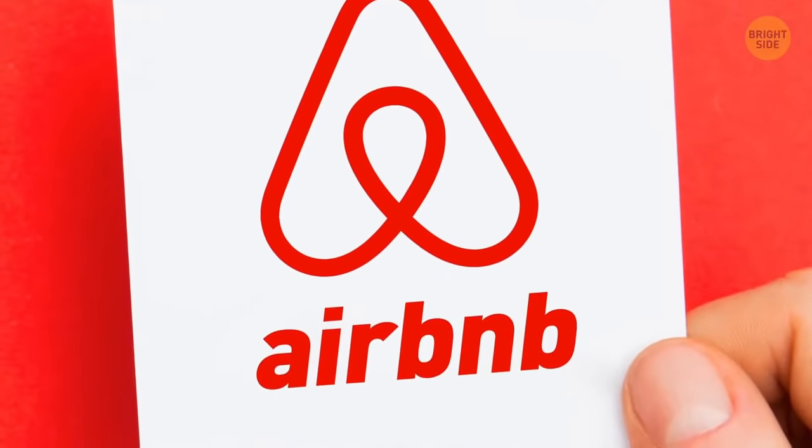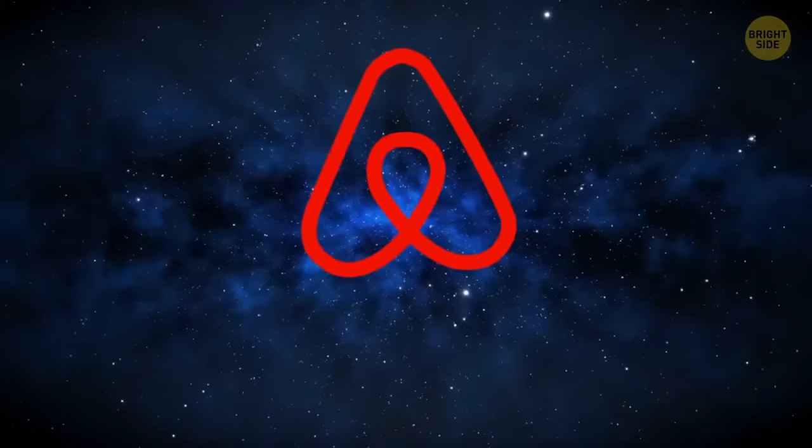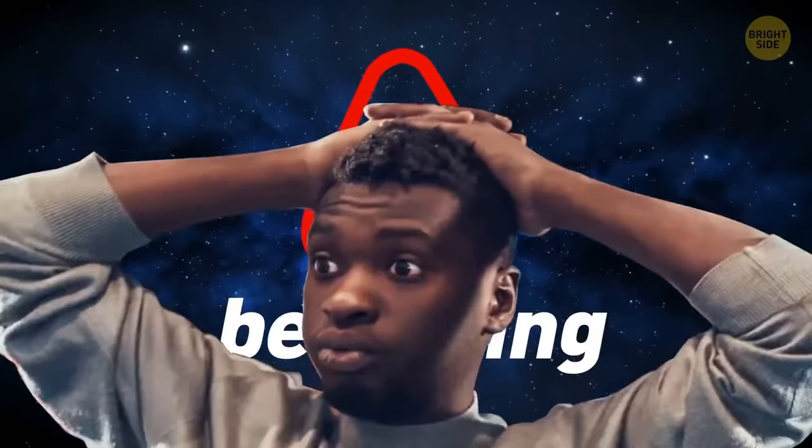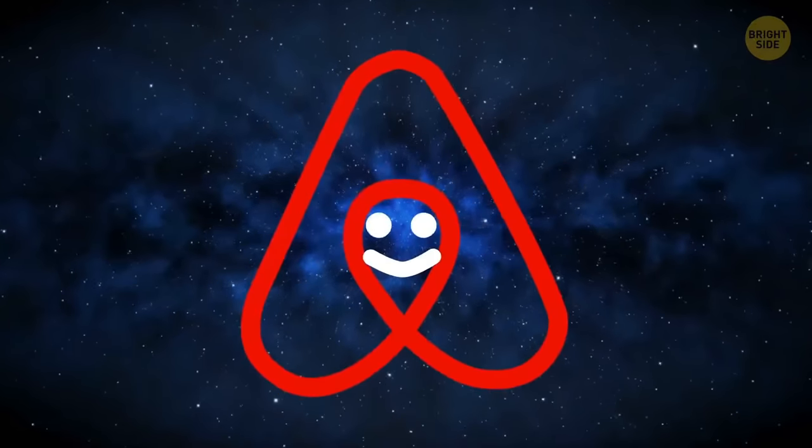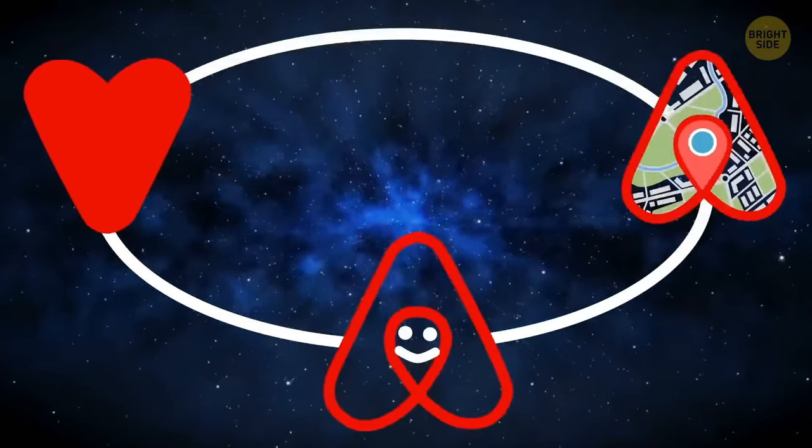Airbnb's logo isn't a bent paper clip, as it may seem to be. Bella, as it's called for belonging, means more than that. There's a person's head, the location symbol, and a heart for love. All joined together, they make Airbnb's iconic A and symbol of togetherness.